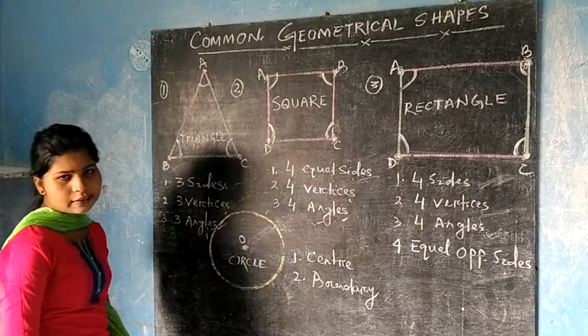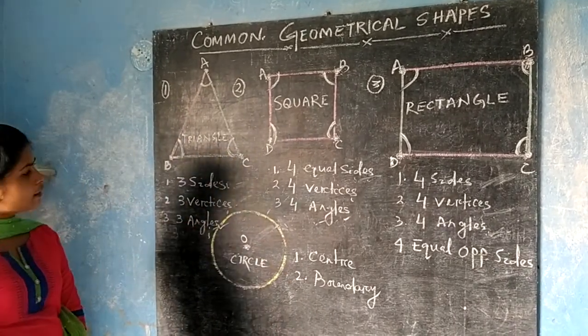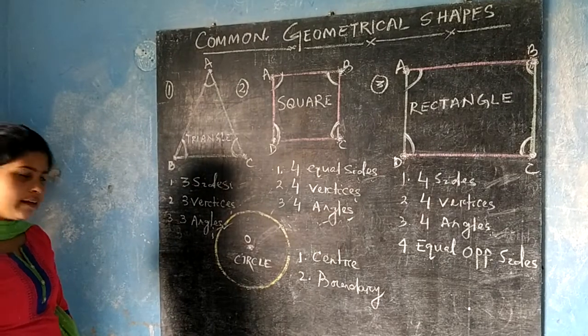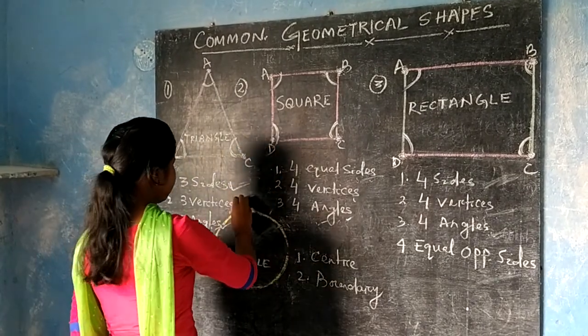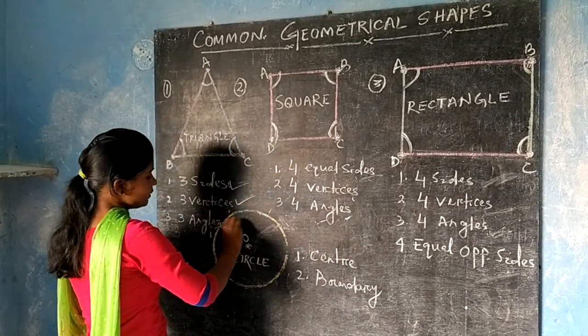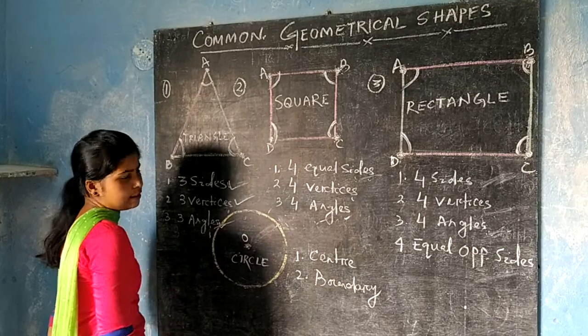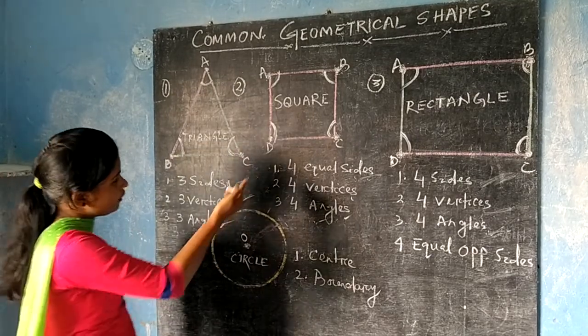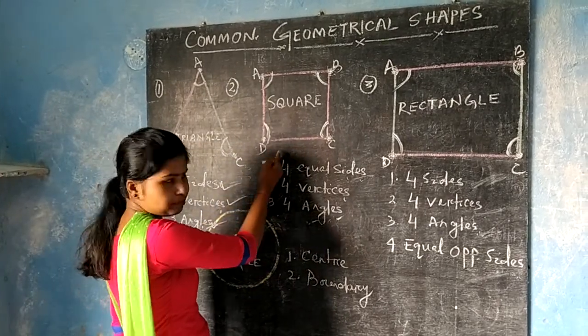So it is called a triangle. It has three sides, three vertices and three angles. Look at the next figure.